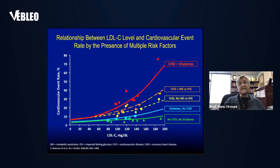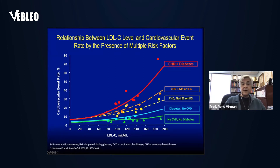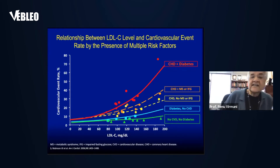The relationship between LDL levels and cardiovascular event rate by the presence of multiple risk factors shows that coronary heart disease with diabetes is associated with the highest cardiovascular event rate, followed by coronary heart disease alone, metabolic syndrome with impaired fasting glucose, diabetes without cardiovascular disease, and finally no cardiovascular disease and no diabetes — which carries the lowest event rate.